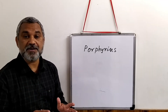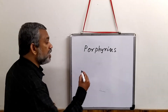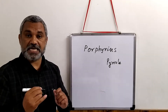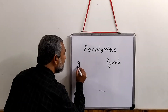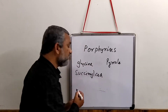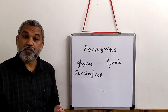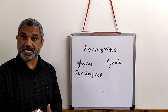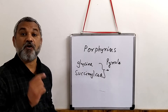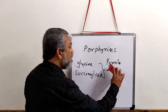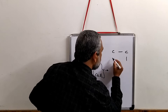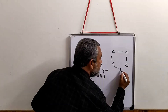The basic unit is pyrrole, which is synthesized from two compounds: glycine and succinyl-CoA. Glycine is an amino acid, and succinyl-CoA is one of the intermediates of the TCA cycle. Together, glycine and succinyl-CoA give rise to the formation of a pyrrole ring. A pyrrole ring structure has four carbon atoms and one nitrogen.